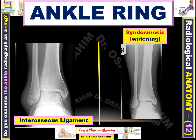Where is the interosseous ligament on this X-ray? First, we should determine the site of the plafond — this is the tibial plafond, the articular surface representing the roof of the foot, the articular surface of the tibia. Proximal to the plafond about one centimeter — this is the site of the interosseous ligament. The interosseous ligament is the fibrous ligament between the distal end of the tibia and the fibula, and should appear like this in normal situations.